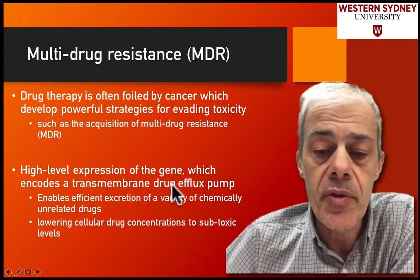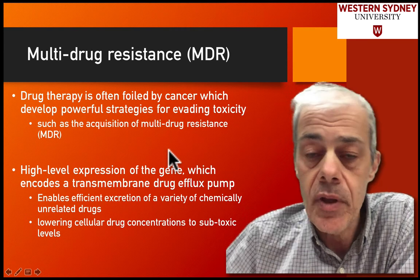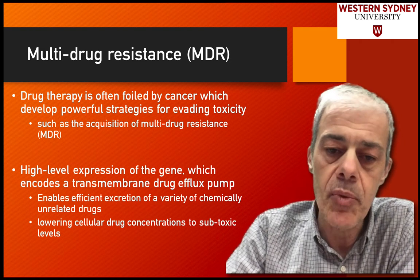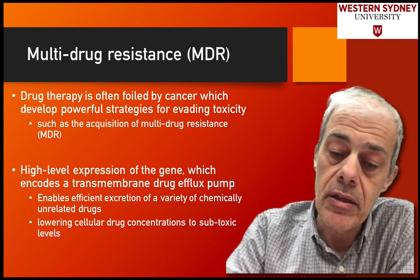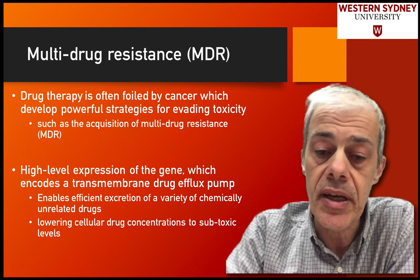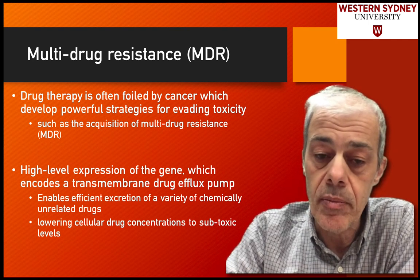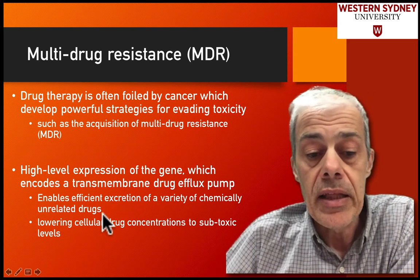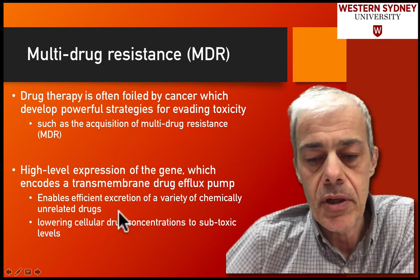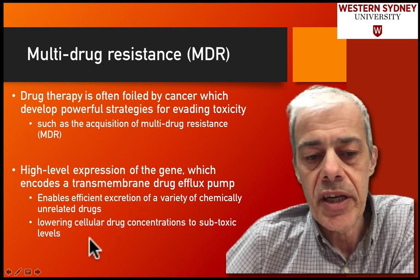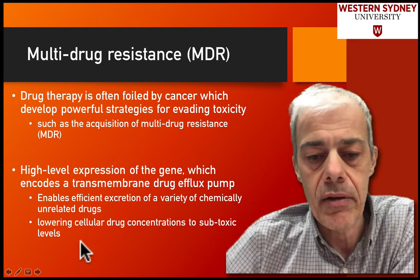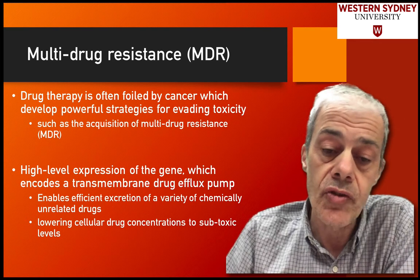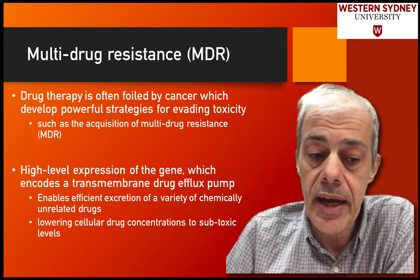Multi-drug resistance arises through high-level expression of a protein which functions as a transmembrane pump — a pump that is able to pump the drug out of the cell. The drug gets in and starts to fight the tumor effectively, but at some point the tumor picks up a mutation that over-expresses a drug efflux pump, and it's then able to pump the drug out of the cell. Despite high levels of drug treatment, there are low levels of drug in the actual cells.